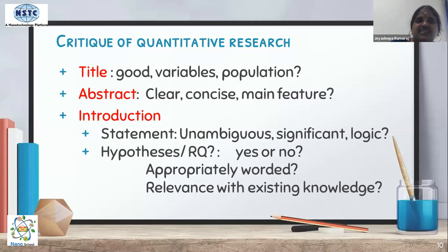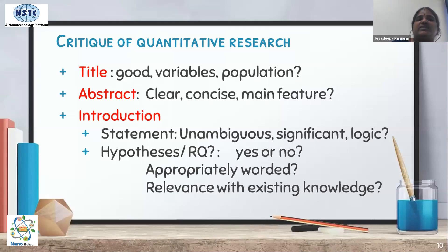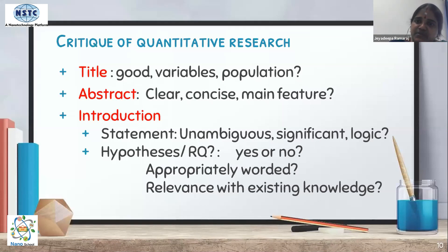Then go to the abstract and check whether it is clear and concise, and whether the main features of the study are included. Reading the abstract should give you an understanding of the entire research process. Then go to the introduction — check whether the problem statement is unambiguously written, whether it is significant to the nursing profession, and whether there is a logical sequence.